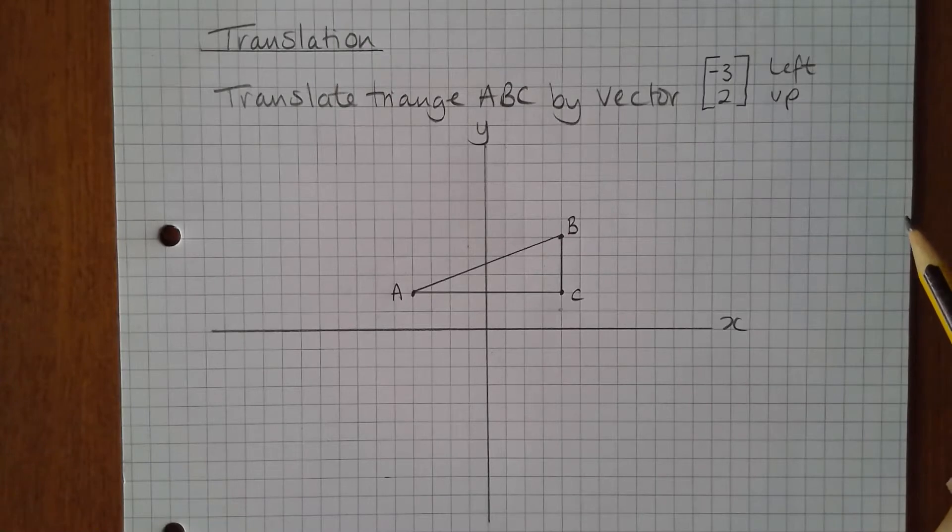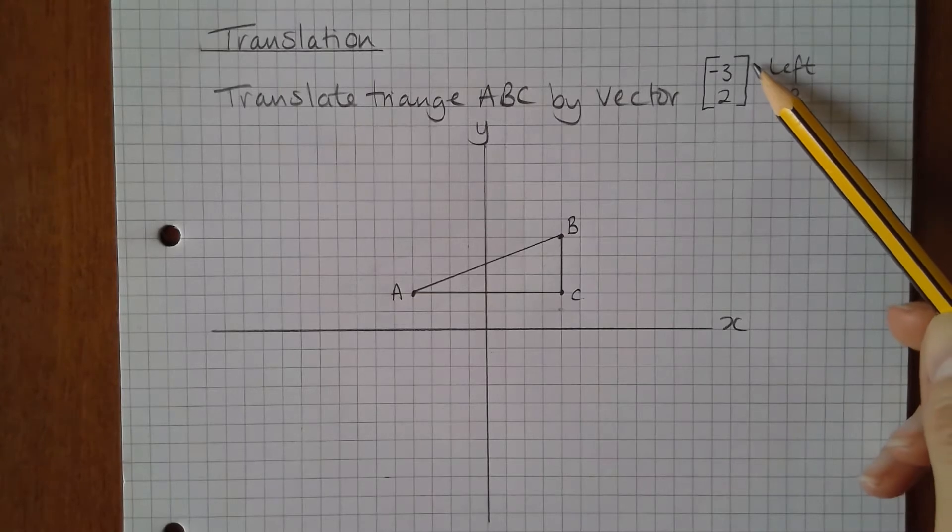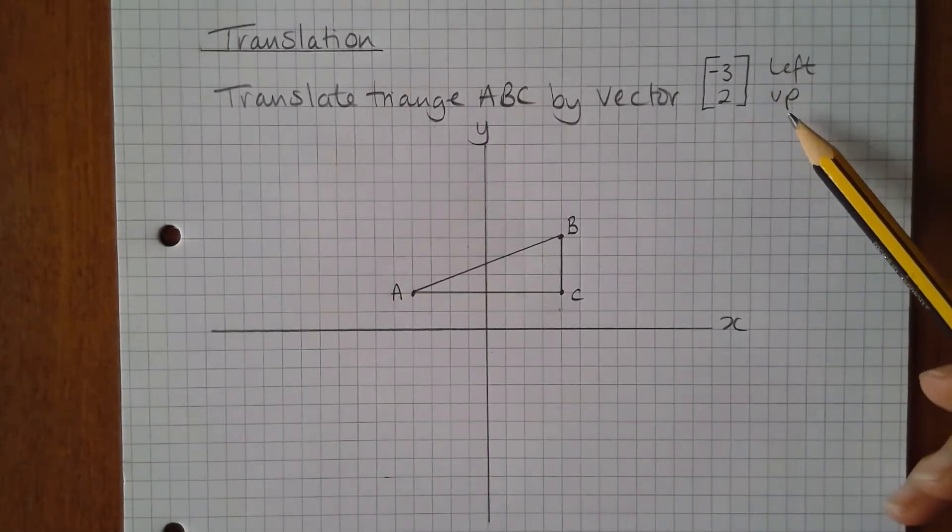At Key Stage 3 you could have described this translation by stating that it needed to move three units to the left and two units up, but vector notation is a very quick way of writing the same thing without writing long words.